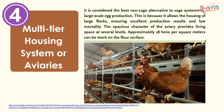Fourth, the multi-tier housing system or aviaries. It is considered the best non-cage alternative to the cage system for large-scale egg production. This is because it allows the housing of large flocks, ensuring excellent production results and low mortality. The spacious character of the aviary provides living space at several levels. Approximately 18 hens per square meter can be stocked on the floor surface.